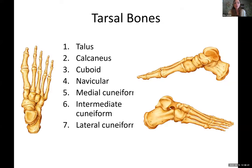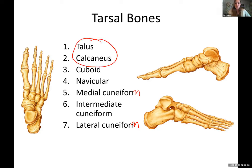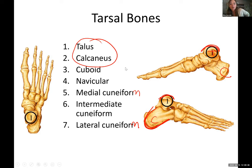Now the tarsal bones. We have seven tarsal bones but I'm only going to make you know two of them. You should know that if you hear 'someone broke their navicular bone or has a fracture in their lateral cuneiform,' you know it's in the foot — those are tarsal bones — but you don't need to know which is which. The two you need to know are circled. Your calcaneus is your heel bone — that's what you can feel. And your talus is the smooth one. Here's another nice picture of the calcaneus.